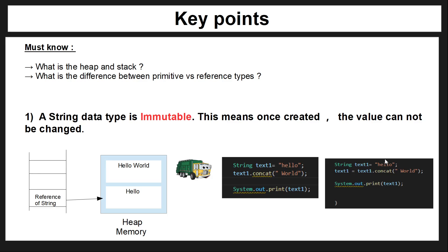If we look at how to do it properly — how to attach the new value to our reference in our stack — we first initialize our variable text one with 'hello'. Then we concatenate it and link it back to our reference. That reference will now point to 'hello world' and our garbage collector will come and dispose of 'hello'. So printing it will output 'hello world'. Importantly, the value does not change once it's been created — it is immutable. What happens is we create more versions, and it's that link that changes.